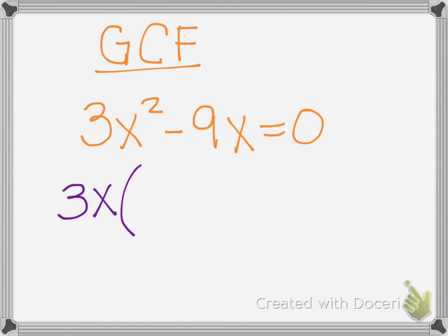When you factor things out, technically you're dividing that term, 3x, from both terms that you started with. So I'm going to get x and I'm going to get minus 3. Set it equal to 0.